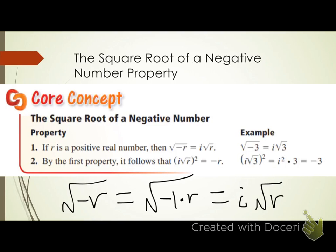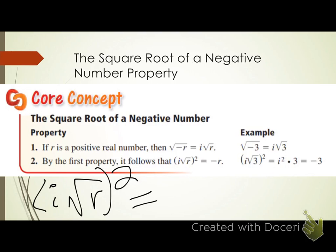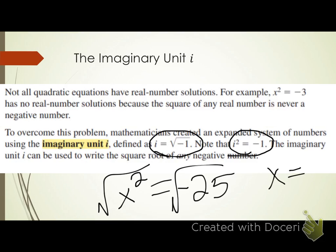By the first property, it follows that i times the square root of r, squared, equals negative r. Starting with i times square root of r, all squared, that gives i squared times r. Since i squared equals negative 1, that's negative 1 times r, which equals negative r. It's important to know that i equals the square root of negative 1, and that i squared equals negative 1.